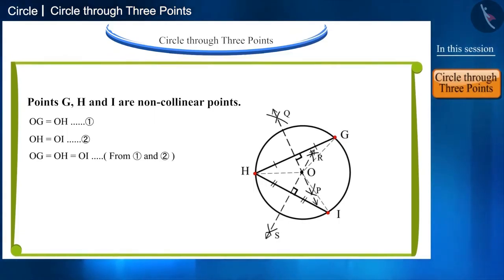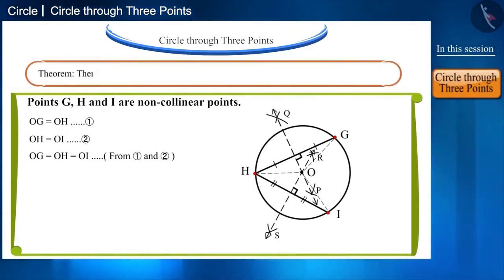Thus, we have proved that we can draw one and only one circle passing through the given three non-collinear points.